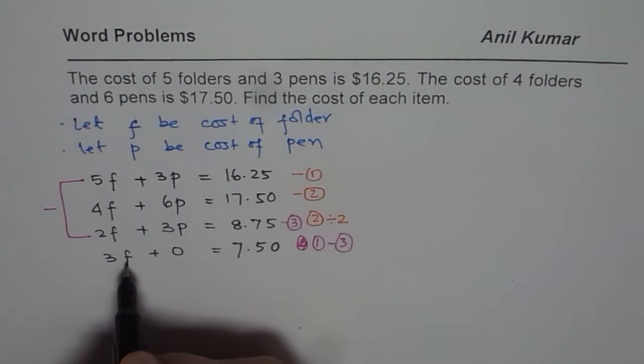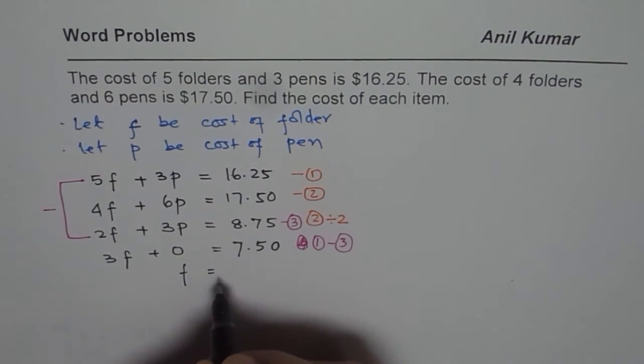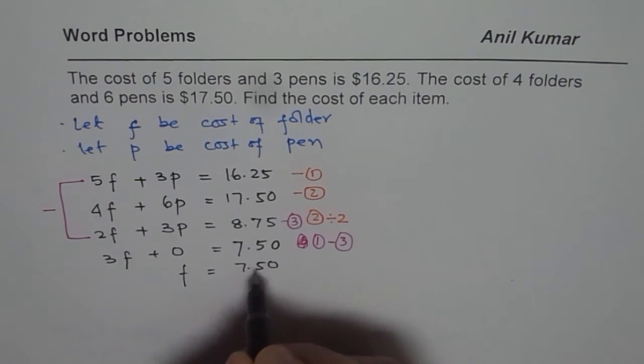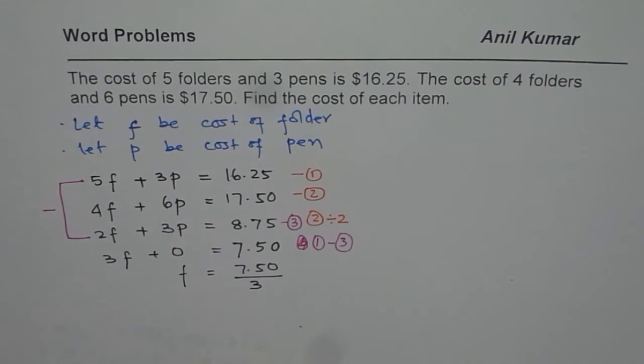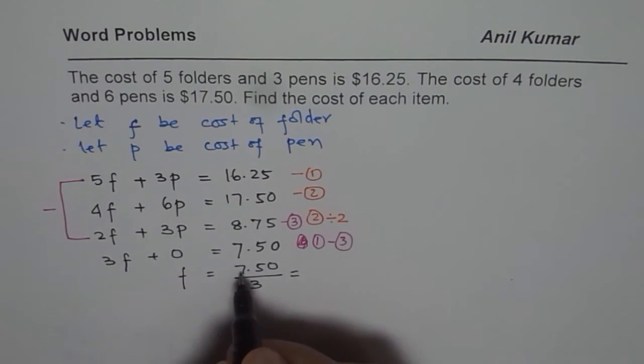Now, to find the value of F, we can divide both by 3. So we get F equals 7.50 divided by 3. So if we divide this by 3, you get 3 times 2 as 6, 15.